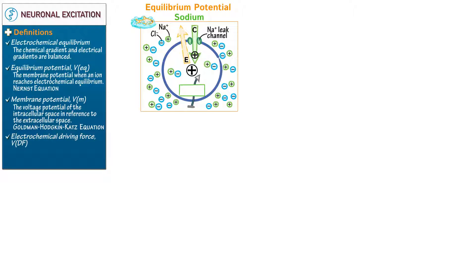Indicate that the equilibrium potential for sodium is positive 60 millivolts. Tying these three concepts together: if a cell is only permeant to a single ion, then at electrochemical equilibrium, the membrane potential is equal to the equilibrium potential of that ion.